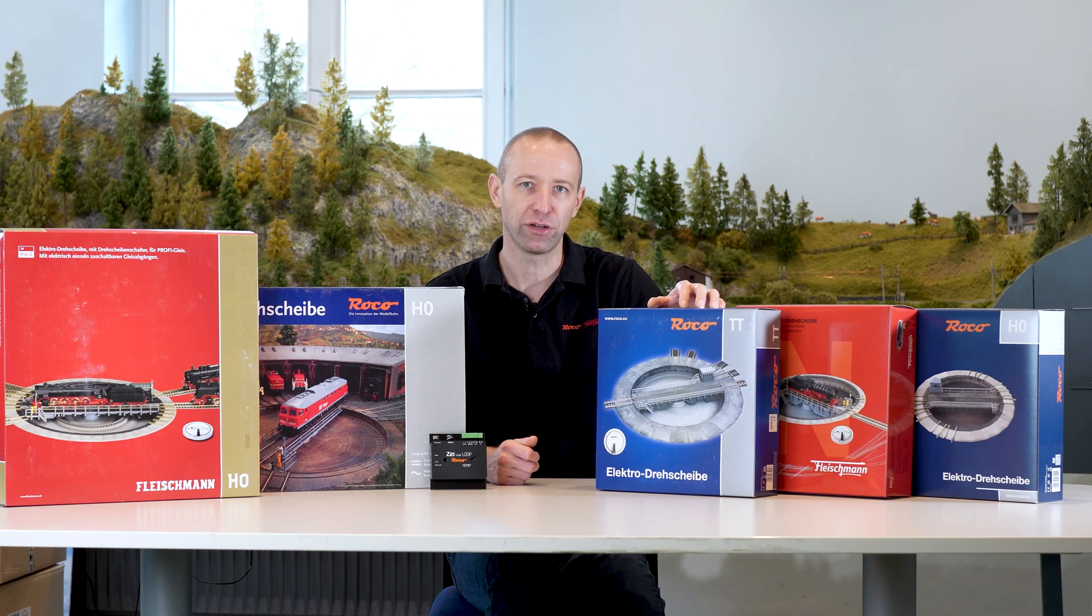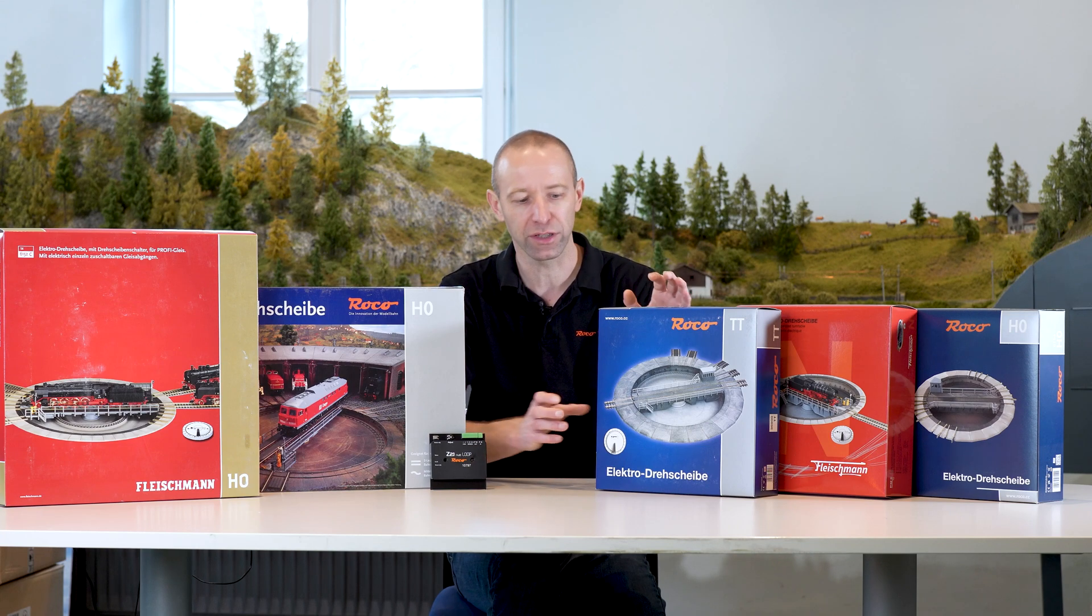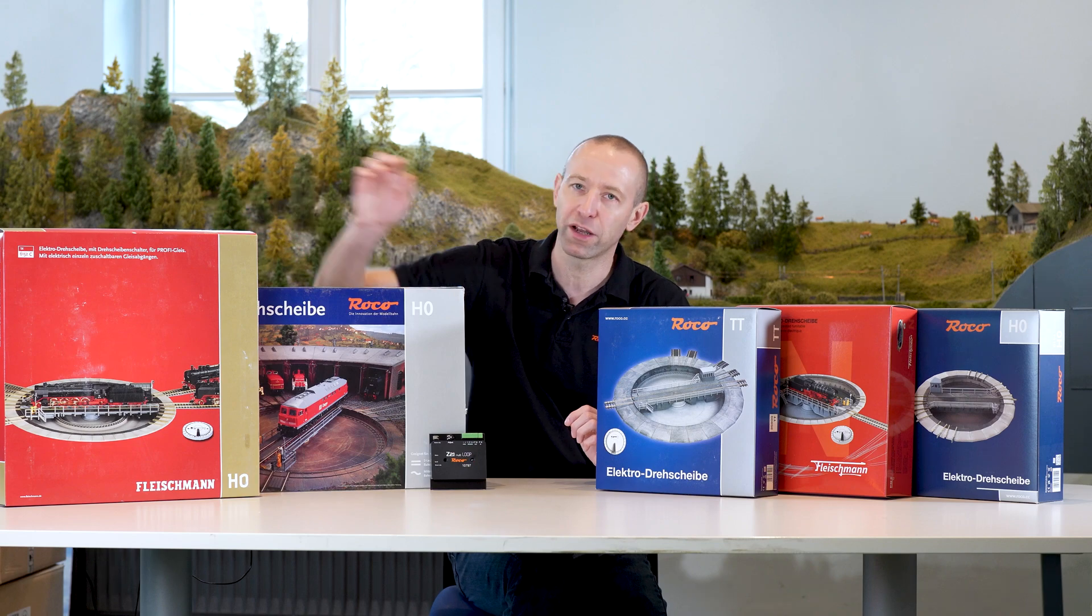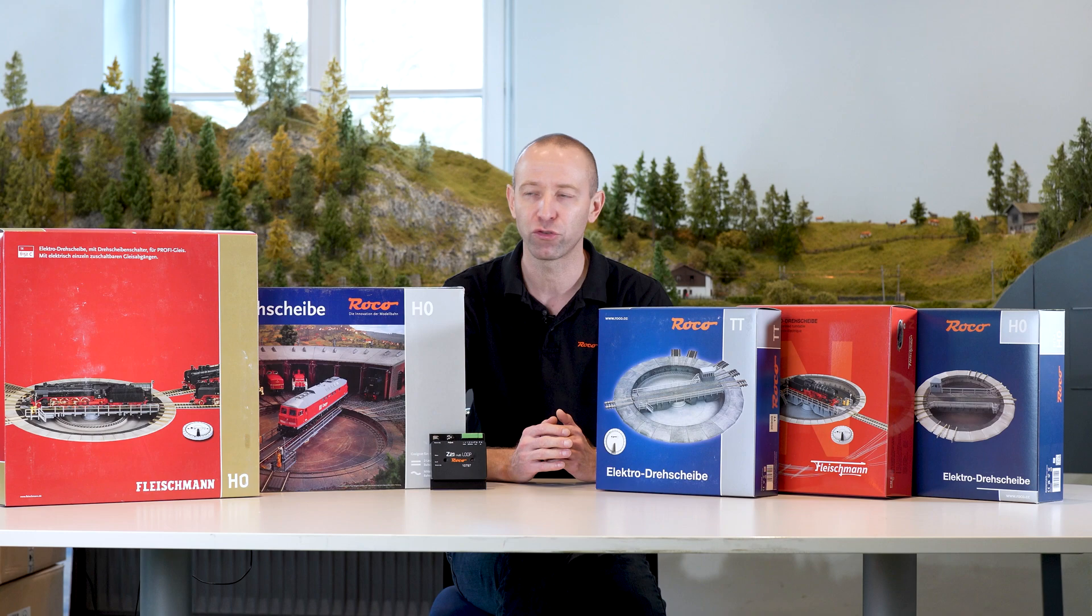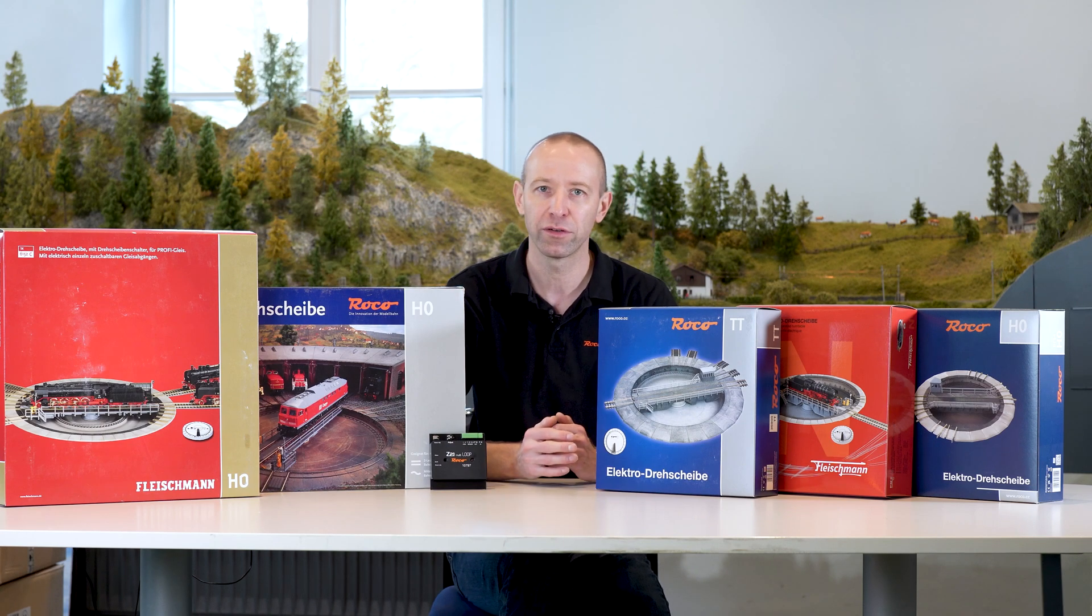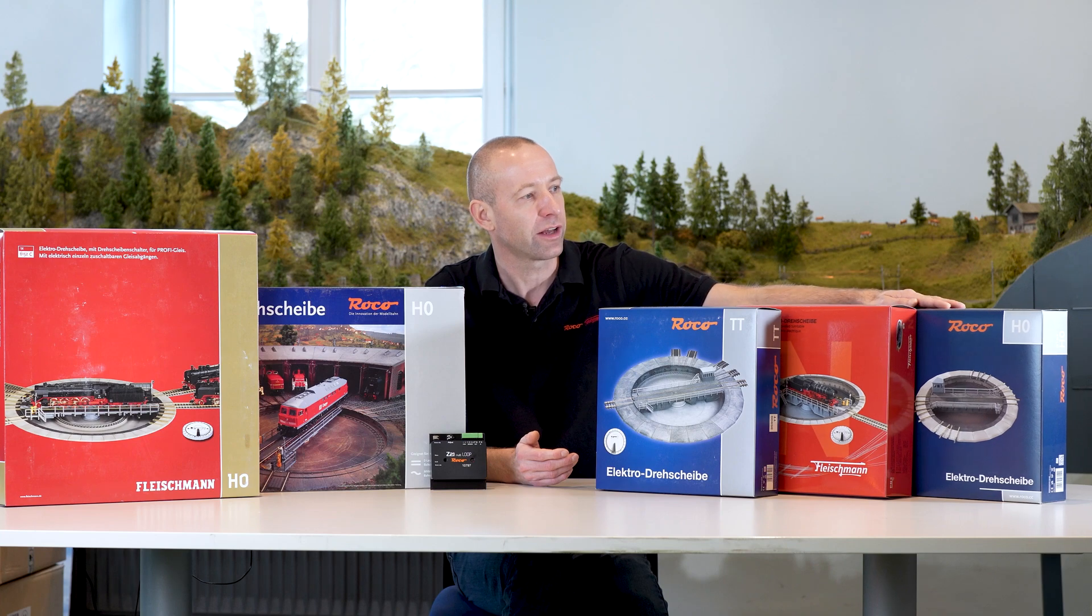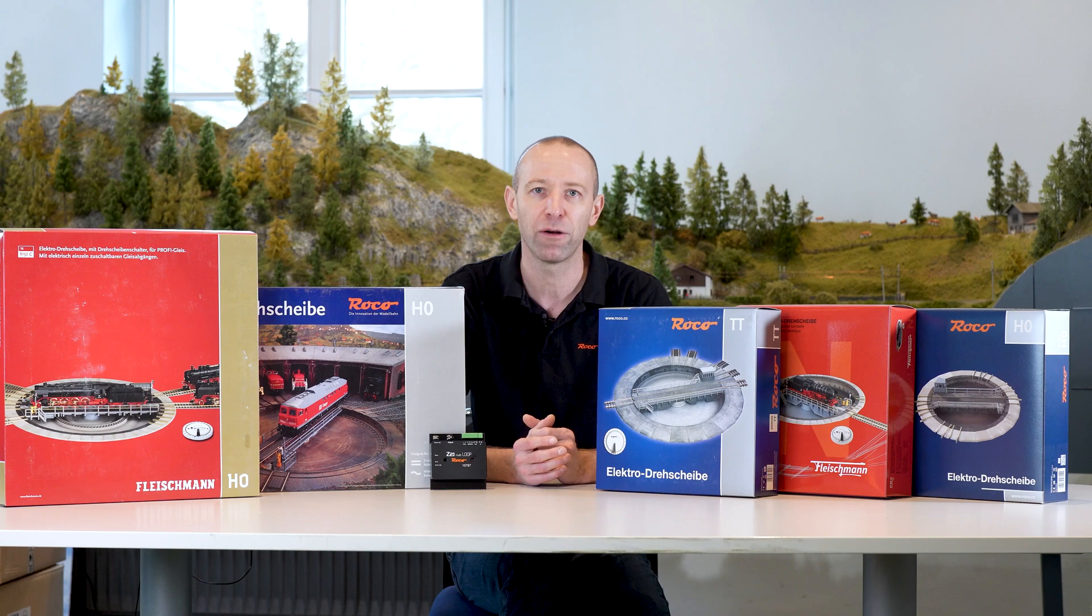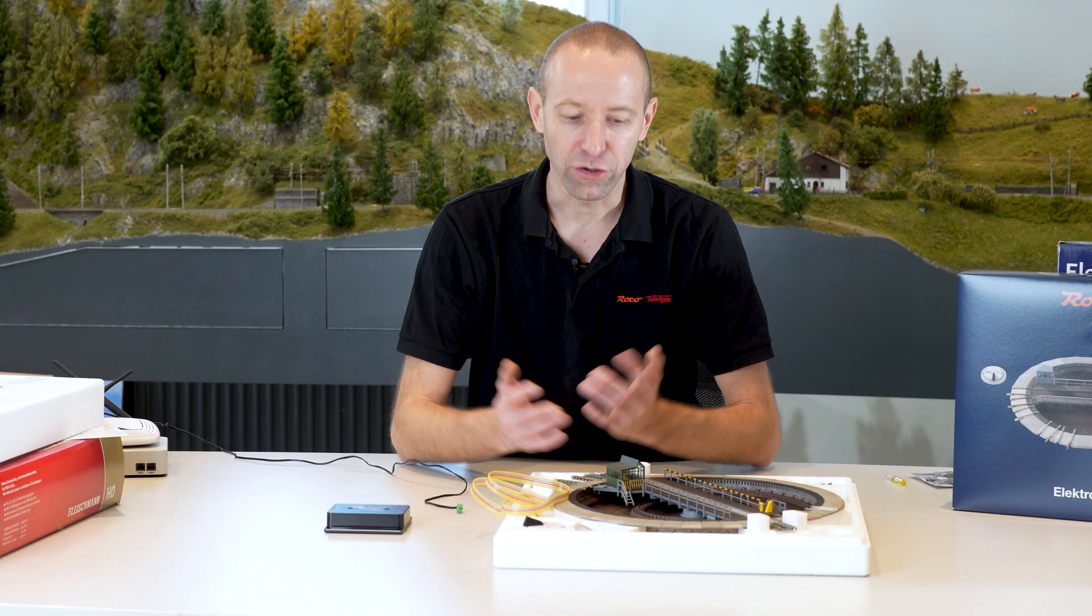With the end turntable, with the Roco TT turntable which was also available from Fleischmann in the early days, but which is basically the exact same turntable, and also with the Fleischmann H0 turntable, we have the same cable colors everywhere from the platform. So let's use the H0 turntable as an example and take a look at how to connect the turntables. The new small Roco turntable and the large Roco turntable have different cable colors. That's why we'll also see how to connect these two turntables to the reverse loop module.